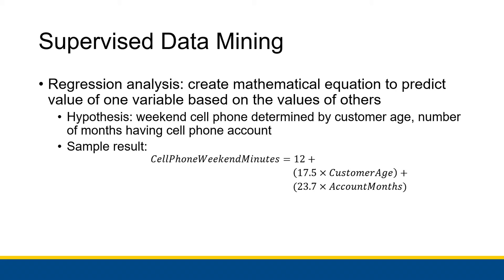You can get errors with regression and any sort of statistical analysis. But if the equation passes testing, it allows the company to look at a theoretical new customer — say, 50 years old — and calculate their expected weekend usage in five months: 17.5 × 50 + 23.7 × 5 + 12 minutes. This lets you use your existing customer base to make predictions about new customers as they age and as the time they've held the account increases.